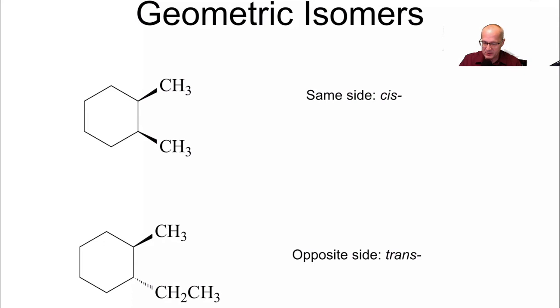All right? Now, rings can also have geometric isomers. They can have cis and trans. Here's an example of a cis ring system where the cyclohexane has two methyl groups coming off, and they're both facing up, and there's also hydrogens coming down like that. Now, this is a cis-1,2-dimethylcyclohexane.